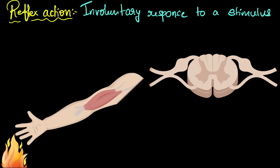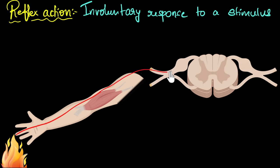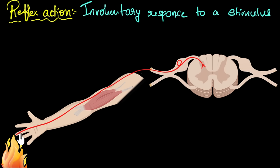So the moment the temperature of my finger increases, that is detected by a neuron present over here. That neuron converts that heat into an electrical signal, and that electrical signal is sent to the spinal cord. And if you're wondering, can a cell be this long? The answer is yes — neurons are the longest cells in our body. So that single neuron takes the electrical signal and sends it to the spinal cord.